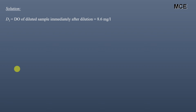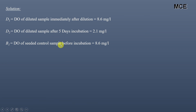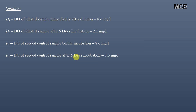Now identifying the variables: D1, the DO of the diluted sample immediately after dilution (the combination of waste water and seeded dilution water), is 8.6 mg/L. D2, the DO of the diluted sample after 5 days incubation, is 2.1 mg/L. B1, the DO of the pure seeded dilution water before incubation, is 8.6 mg/L. B2, the DO of the seeded control sample after 5 days incubation, is 7.3 mg/L.